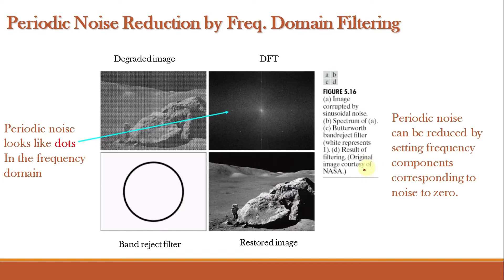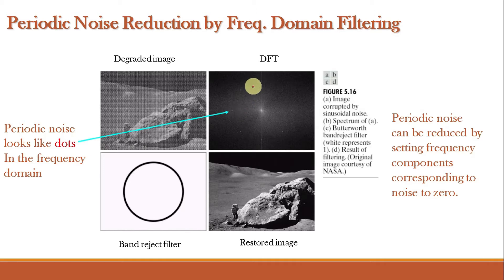The periodic noise can be reduced by setting frequency components corresponding to the noise to zero. From visual inspection we can find out where the periodic noise is located in the frequency domain, and hence we can apply different techniques to remove it.